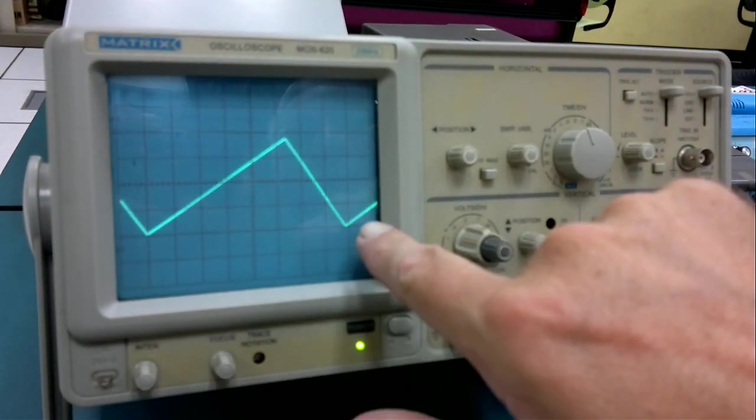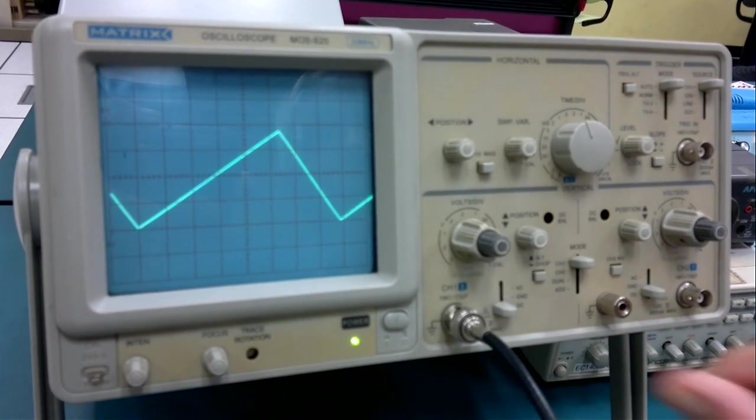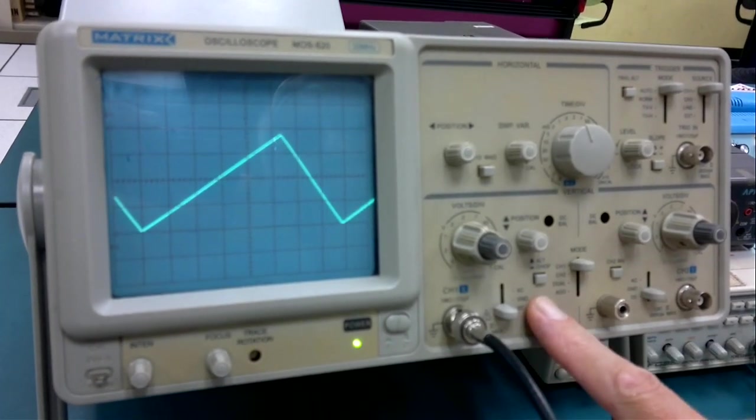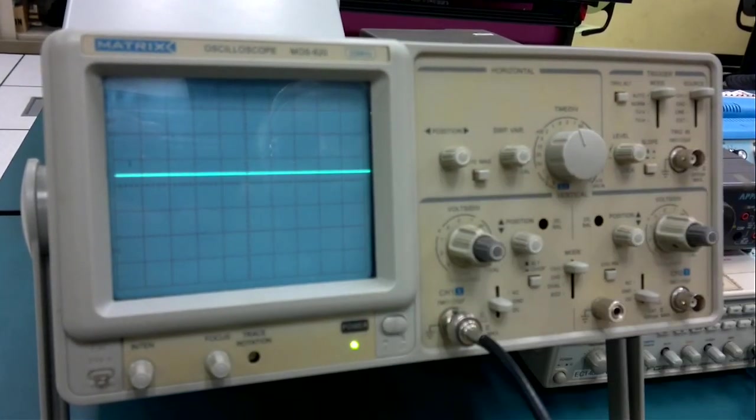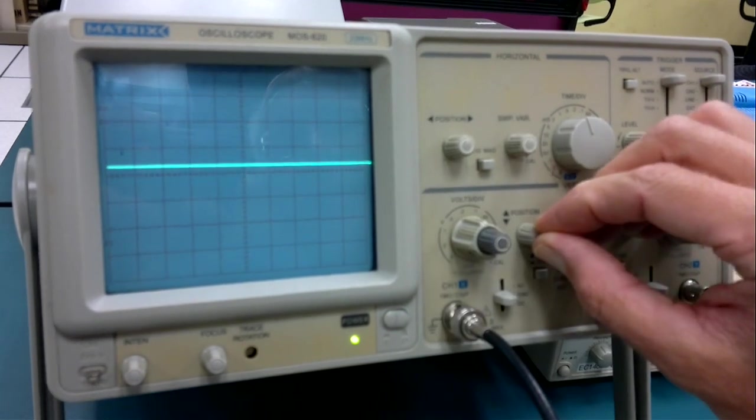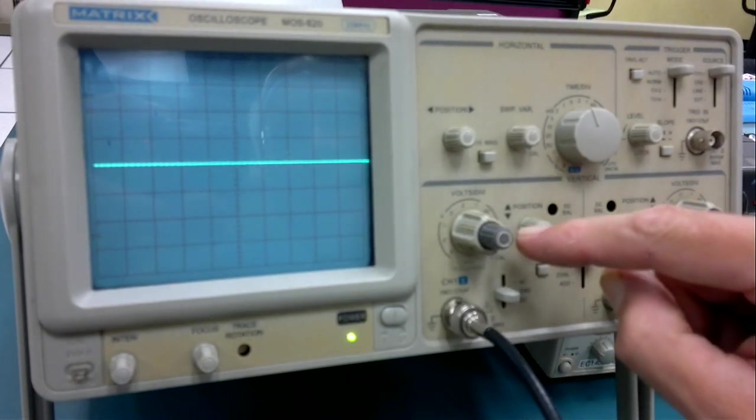So, we know the height and we know how long the cycle is. One more thing to look at. Down here, we have a ground position for the input. There we go. The ground is somewhere in the middle. We can put it nice and conveniently on the center line.